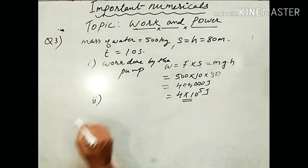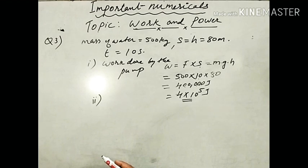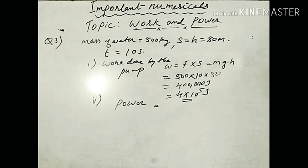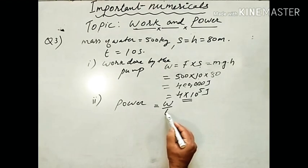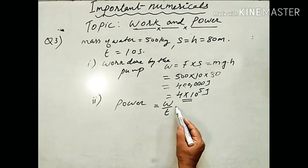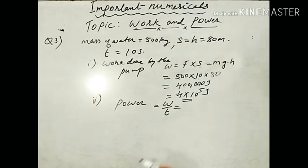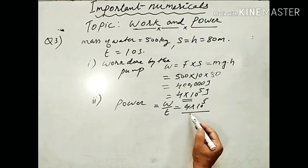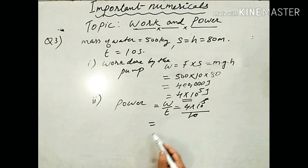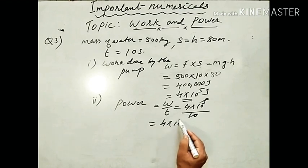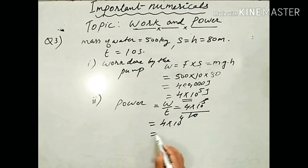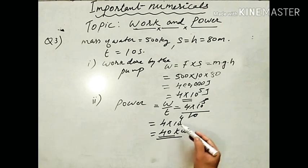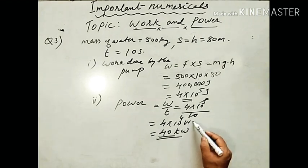Second part — power at which the pump works. Power = rate of doing work = W/t. So P = 4 × 10⁵ ÷ 10 = 4 × 10⁴ Watt, which can also be written as 40 kilowatt. Both answers are correct.